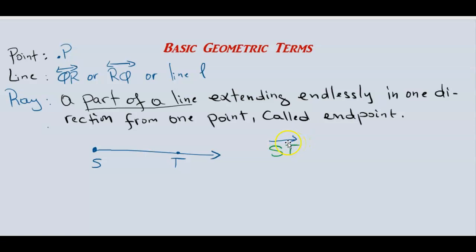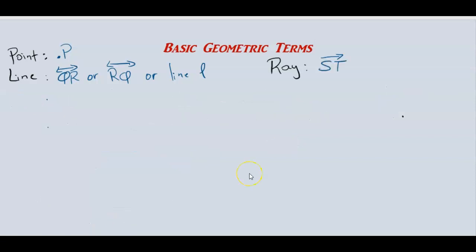For example, if you see the ray symbol over MN, you read it as 'ray MN.' When drawing it, the first letter is where the endpoint is — so M is the endpoint — and then you place N anywhere else on the ray and put the one-sided arrow symbol on top.